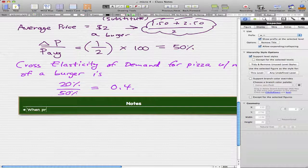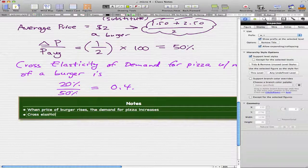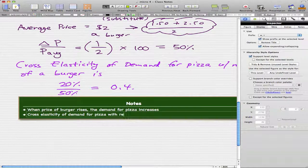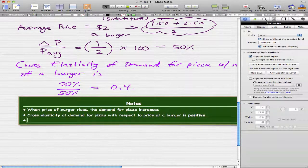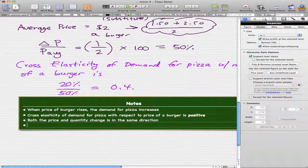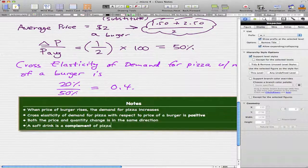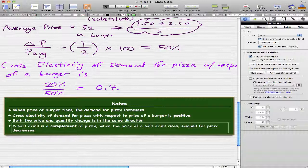When the price of burger rises, the demand for pizza increases and the cross elasticity of demand for pizza with respect to the price of a burger is positive because we ended up with 0.4. Both the price and quantity change in the same direction because we got 50 and 20 and they're both positive, so the changes are in the same direction.